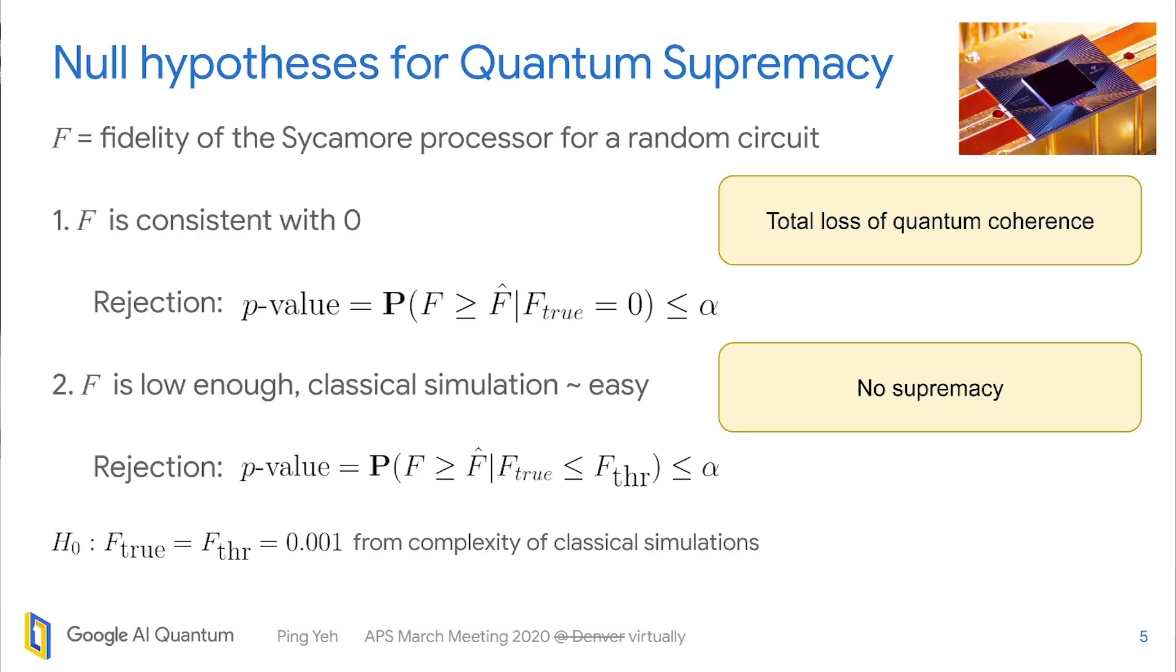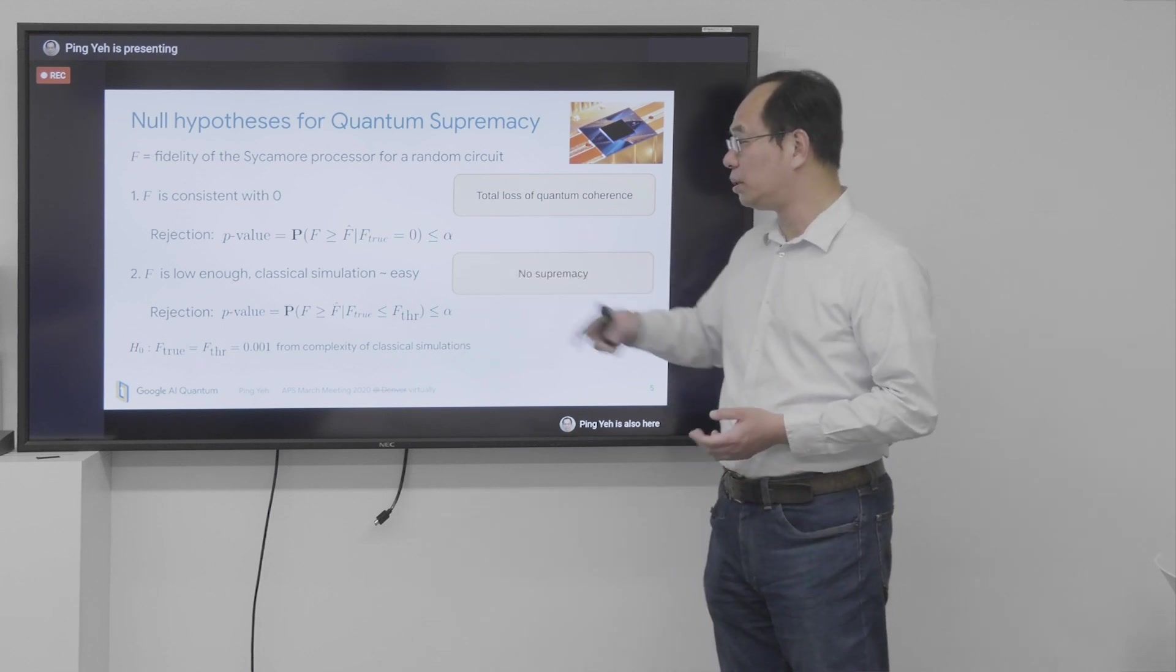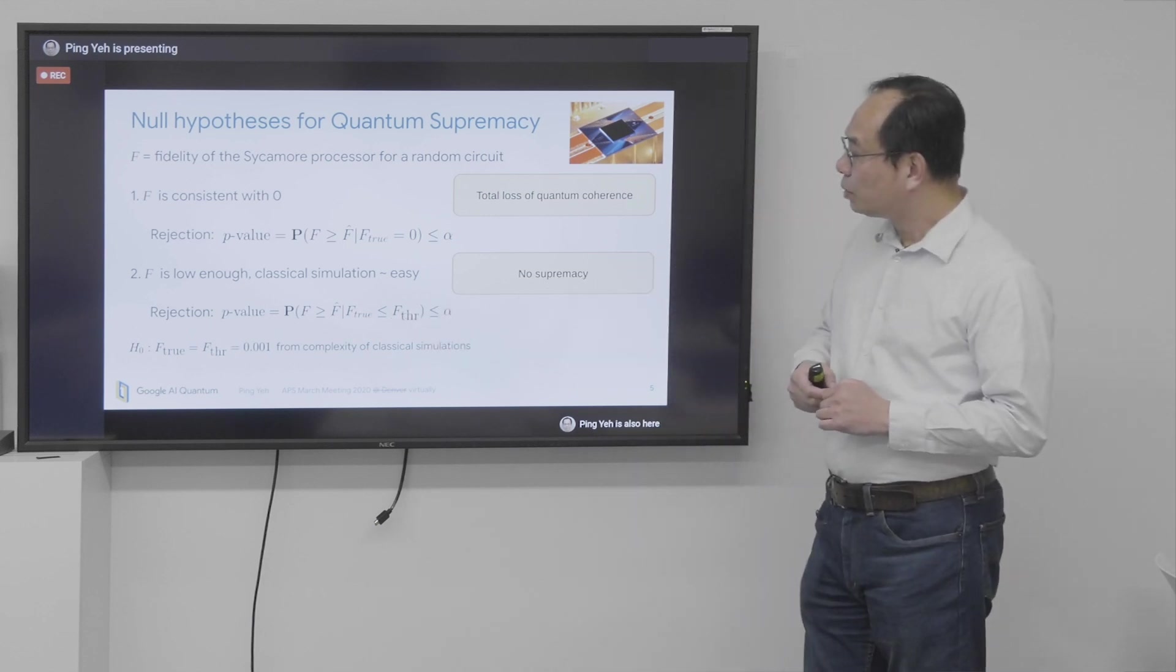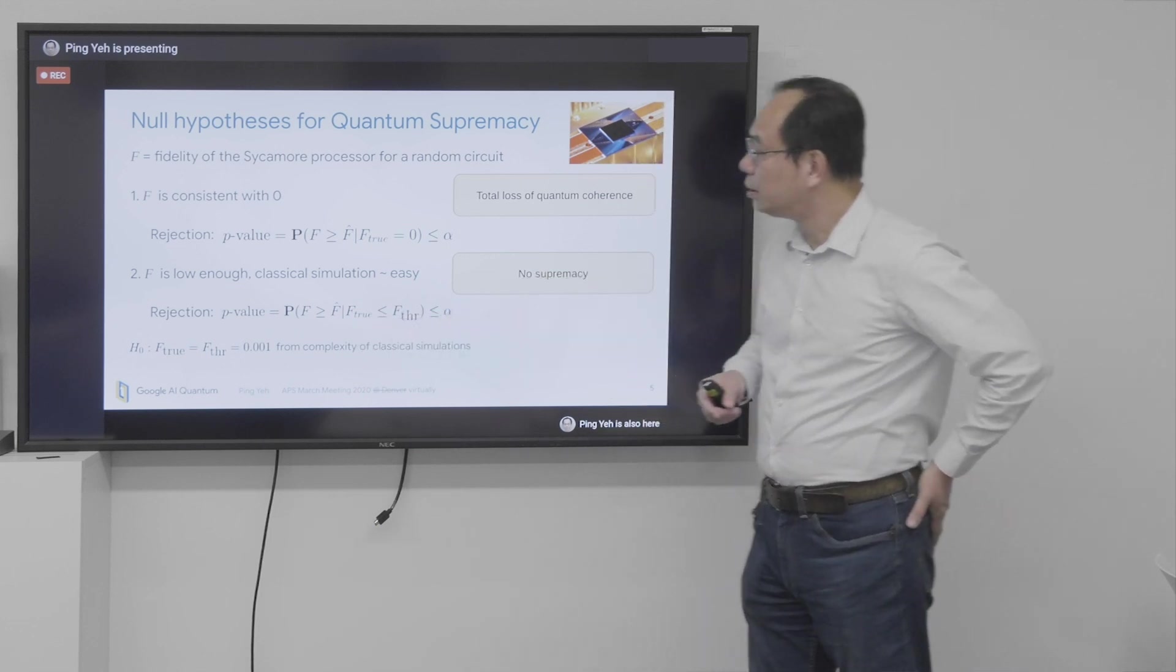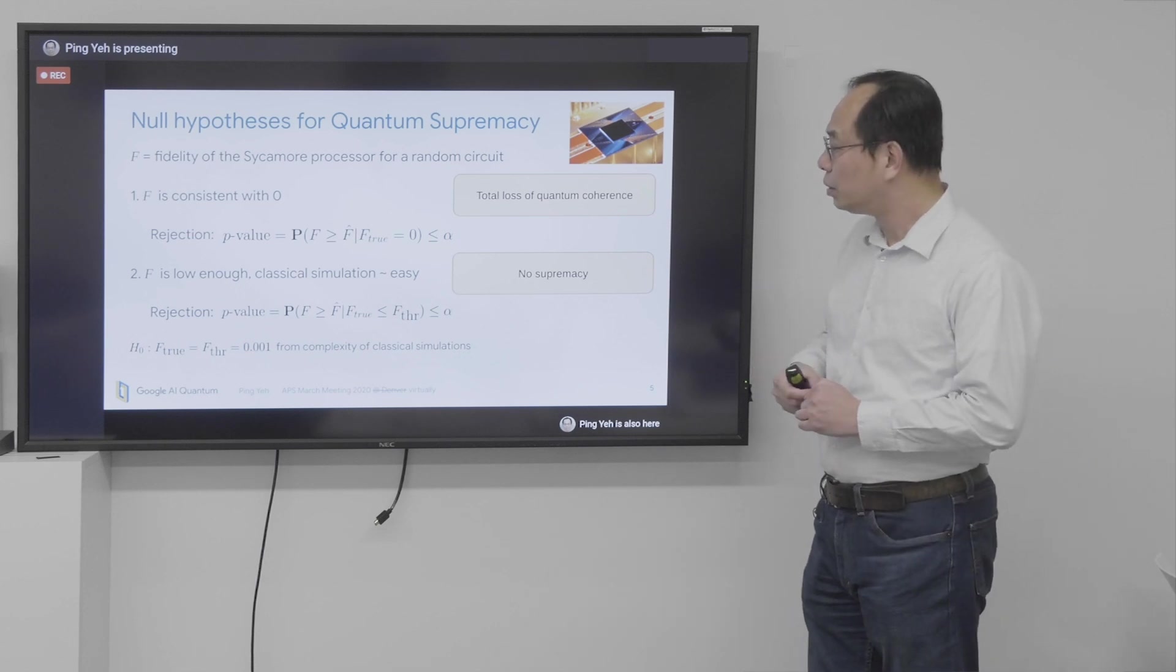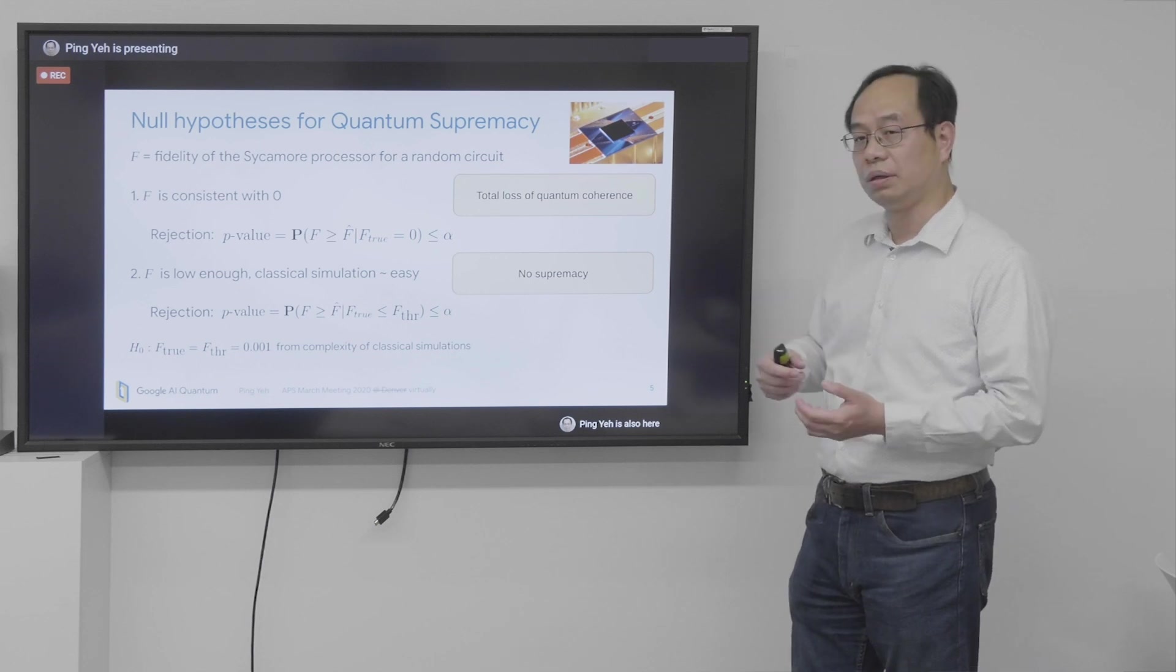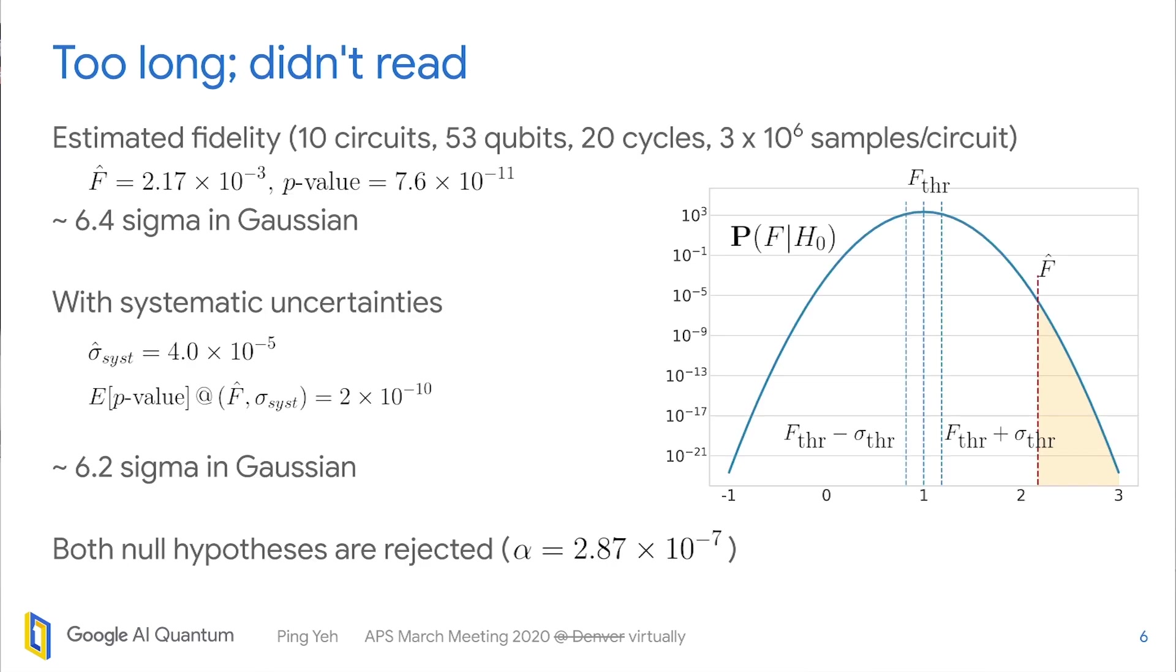And what we do is, of course, we follow this p-value thing. And here, apparently, if you can reject the second one, the first one is rejected. So we set our Hnull to be the second one. And we set this threshold to be 0.1%, which comes from a complexity analysis of classical simulations. At which value the simulation should be already hard enough. And we want to reject it. That means we are significantly above it.